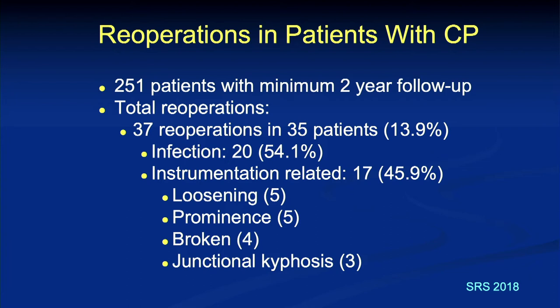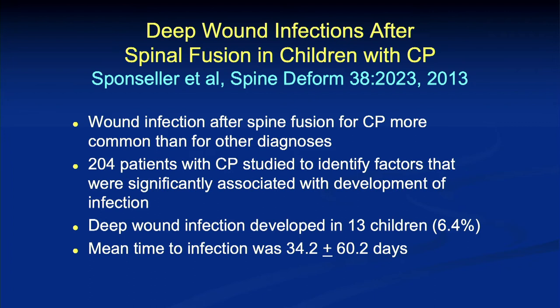When thinking about complications, we want to minimize reoperations. We took a detailed look at how often patients with cerebral palsy who get operated go back to the OR and why. In 251 patients, 35 had a re-op — 14%. Infection was about half, and instrumentation-related issues accounted for the other half: loosening, prominence, broken screws, and junctional kyphosis.